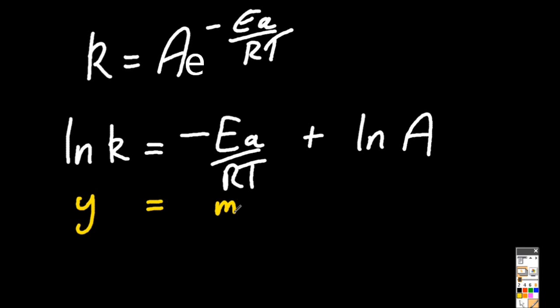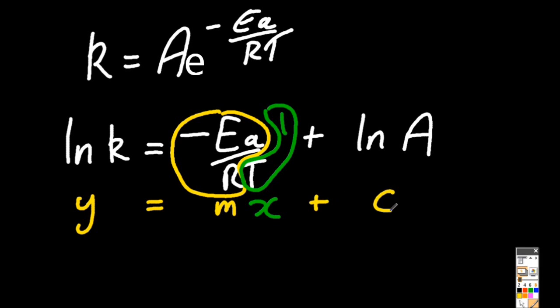Which has similarities to y equals... well there's m, the gradient, x, well that's the inverse of T, or 1 over T, and c is the intersection with the y-axis, that will be ln A.